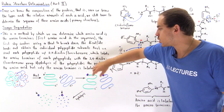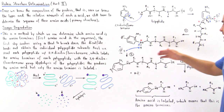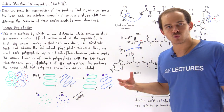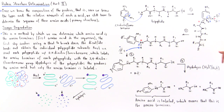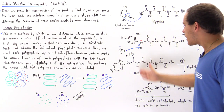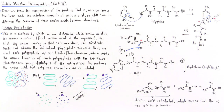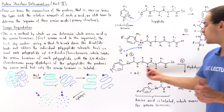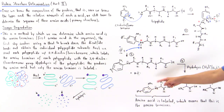The purple group shown in the sketch represents the 2,4-dinitrofluorobenzene label. In step four, we take our labeled tripeptide and mix it with hydronium in water so that hydrolysis takes place, breaking each one of the peptide bonds to form the individual amino acids. Only one of these amino acids will contain the labeled section — the first amino acid in line — and we can then use an analytical technique to identify which amino acid carries that 2,4-dinitrofluorobenzene group.